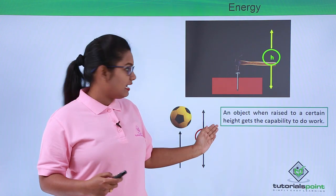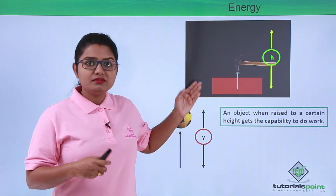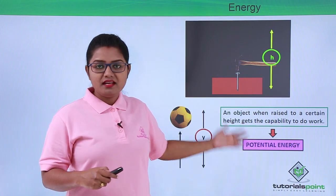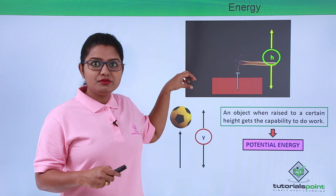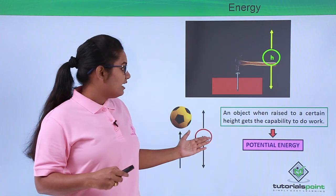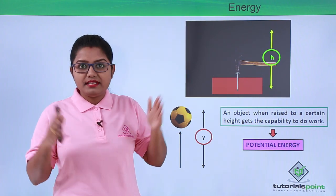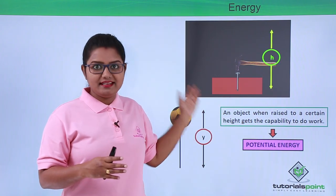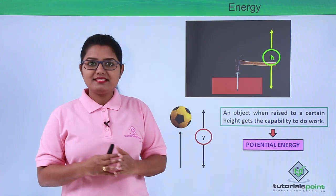We also concluded that an object raised to a certain height is capable of doing work and possesses some energy. This energy that an object possesses when raised to a certain height is called potential energy — specifically gravitational potential energy, since raising the object means doing work against the force of gravity. These two kinds of energy — kinetic energy and potential energy — when put together are called mechanical energy. So kinetic and potential energy are the two types of mechanical energy. With this we have come to the end of this video. Thanks for watching TutorialsPoint — Simply Easy Learning.